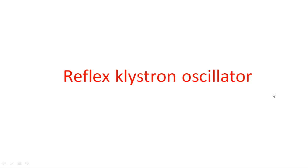In this video I'm going to explain the operation and construction of the reflex klystron oscillator. It is a second type of O-type tubes. We have previously seen the klystron amplifier — every type of tube has two categories: amplifier and oscillator. Klystron comes under O-type tubes and has both an oscillator and an amplifier. The klystron amplifier was covered in previous videos.